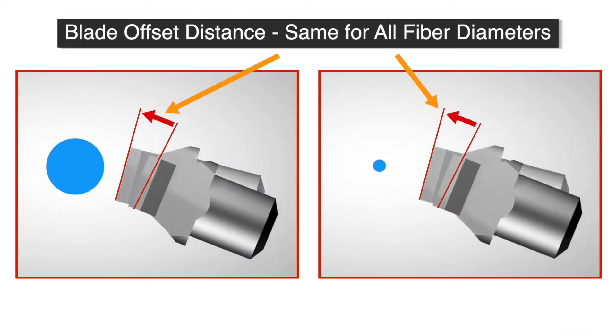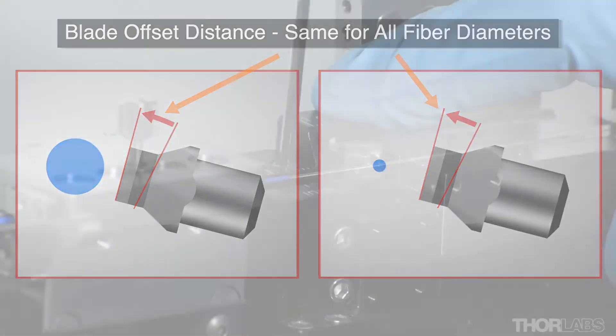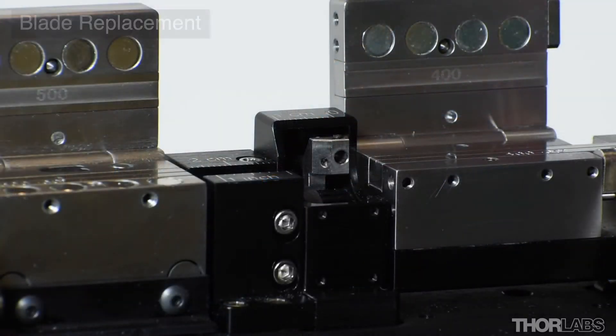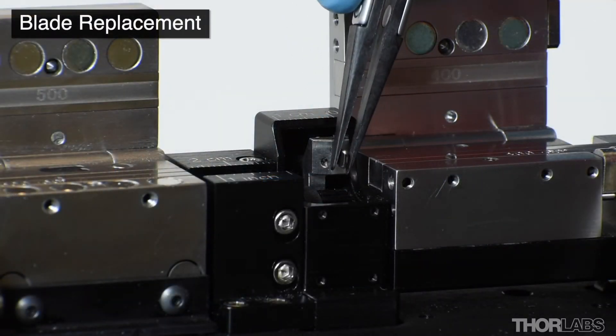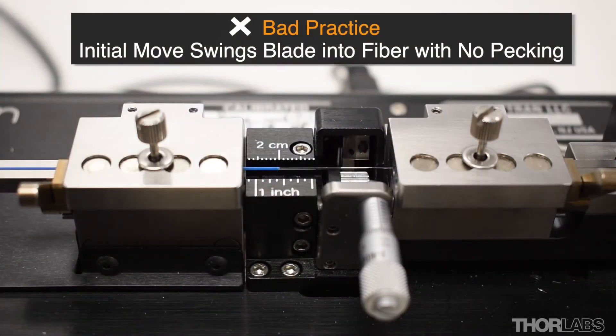As the blade offset applies to all cleave files and fiber sizes, it only needs to be modified when a blade is repositioned or replaced. This accounts for variation in the blade dimensions and the position of the blade. This will prevent the blade moving too far forwards into the fiber and being damaged prematurely.